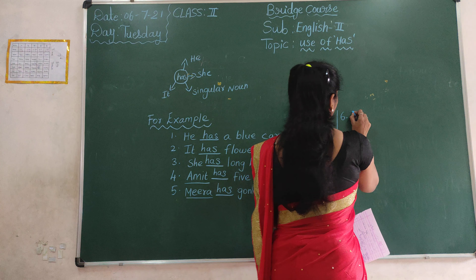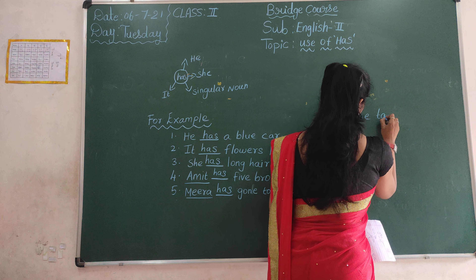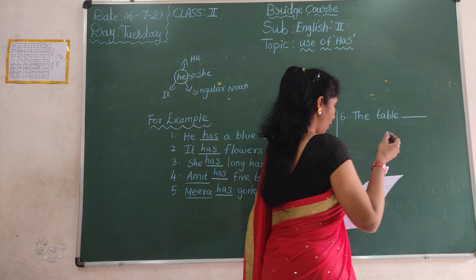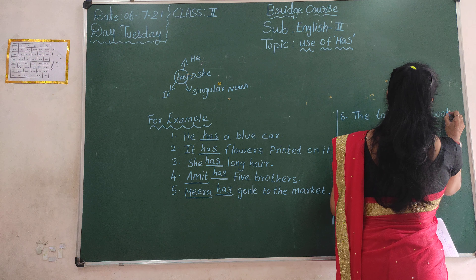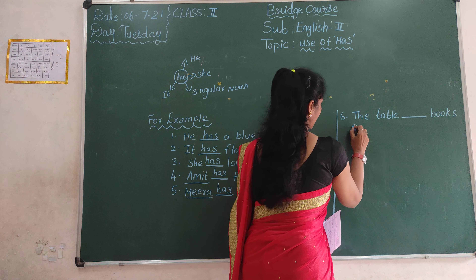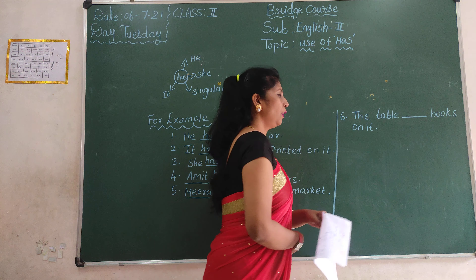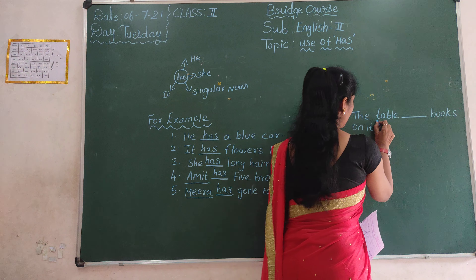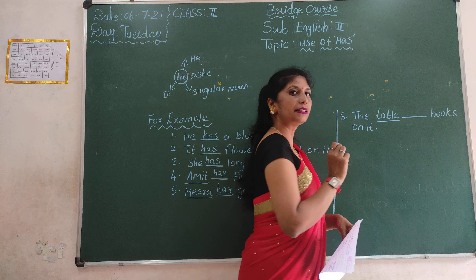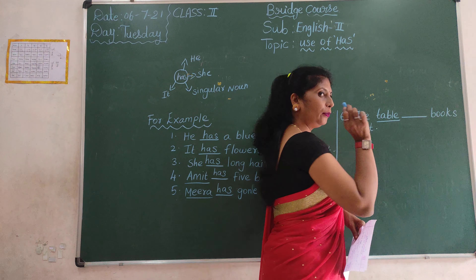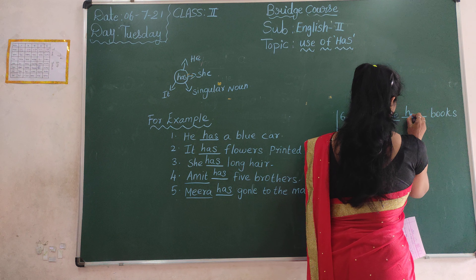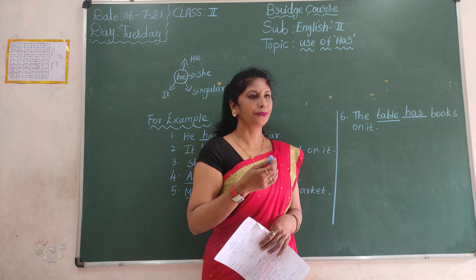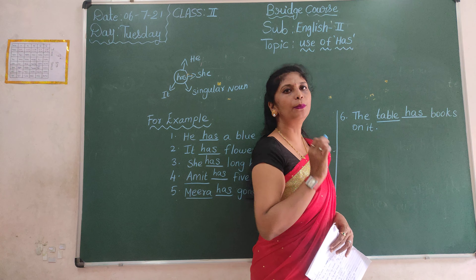Next example: the table dash books on it. Table is the name of a thing, and table is one — singular. So we write 'has'. The table has books on it.